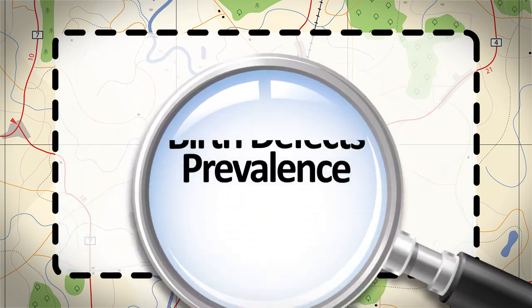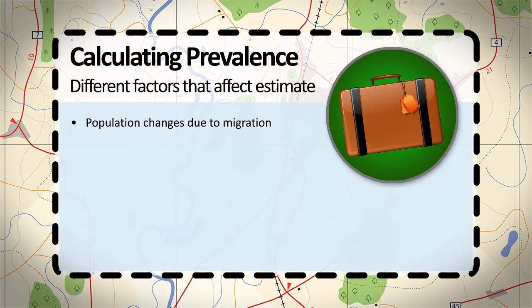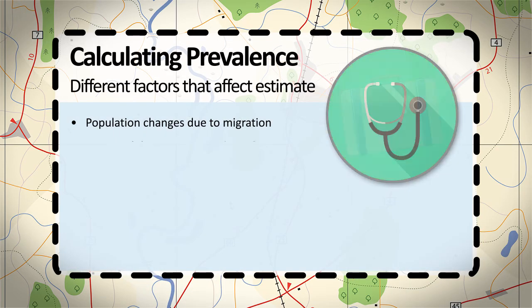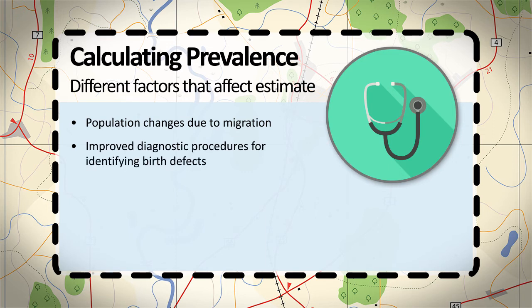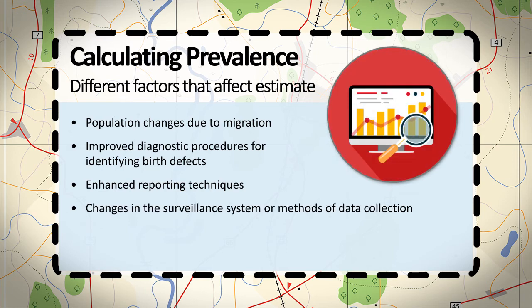When it is time to interpret the prevalence of birth defects, remember that the estimate could be affected by different factors, such as population changes due to migration, improved diagnostic procedures for identifying birth defects, enhanced reporting techniques, and changes in the surveillance system or methods of data collection.